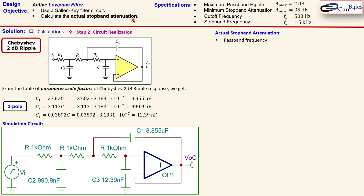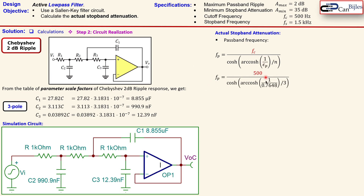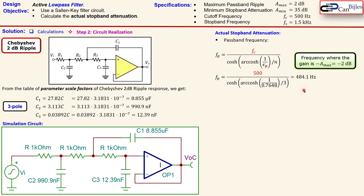Calculating the Chebyshev stopband attenuation works quite differently from the Butterworth case. The passband frequency is related to the cutoff frequency via the inverse hyperbolic cosine function, involving the filter order and epsilon_p. Substituting 500 Hz, epsilon_p = 0.7648, and filter order n = 3 into the formula gives a passband frequency of approximately 484 Hz — slightly below 500 Hz, where the ripple ends and the gain reaches −2 dB.